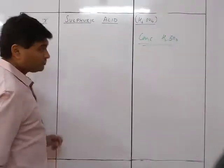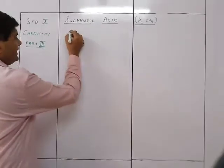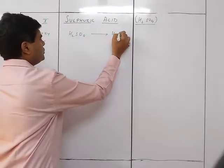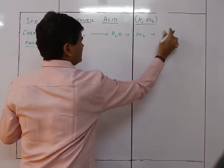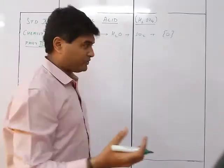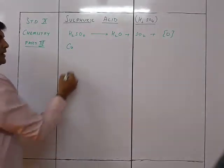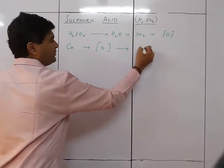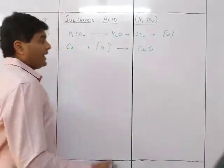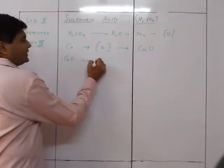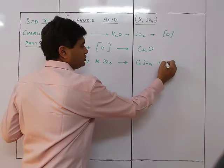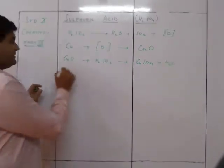The oxidation is caused by H₂SO₄: on heating, it decomposes to give H₂O + SO₂ + nascent oxygen. This nascent oxygen is the key to any reaction. When copper comes in contact with nascent oxygen, it forms CuO, which then reacts further with H₂SO₄ to give CuSO₄ + H₂O.